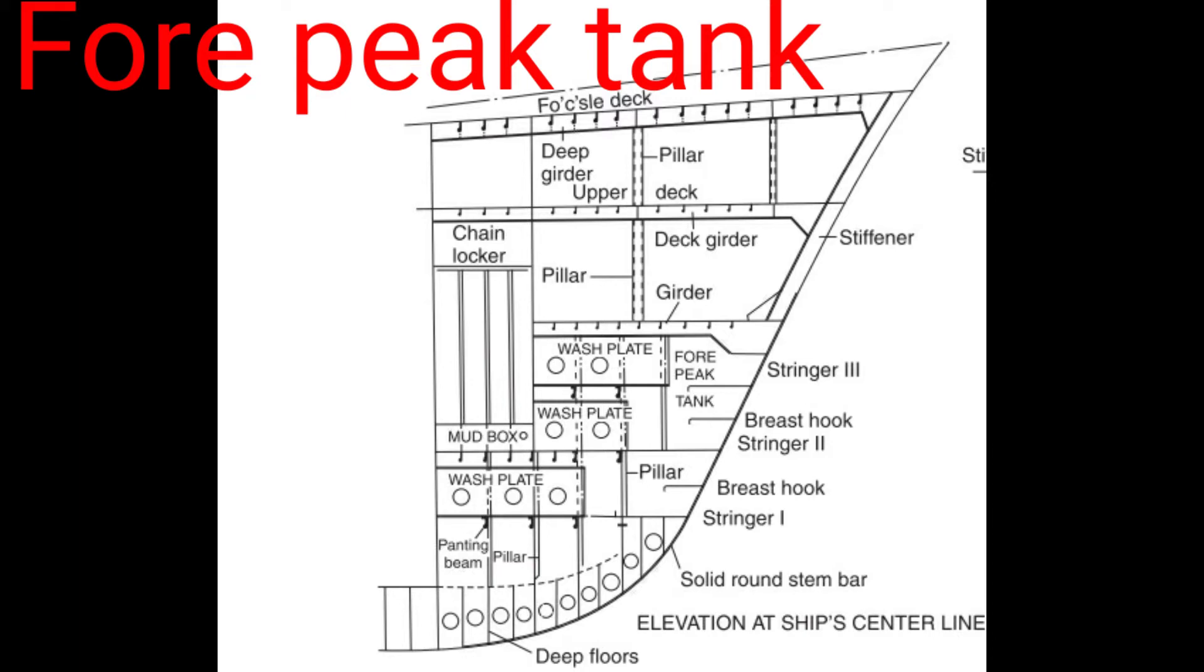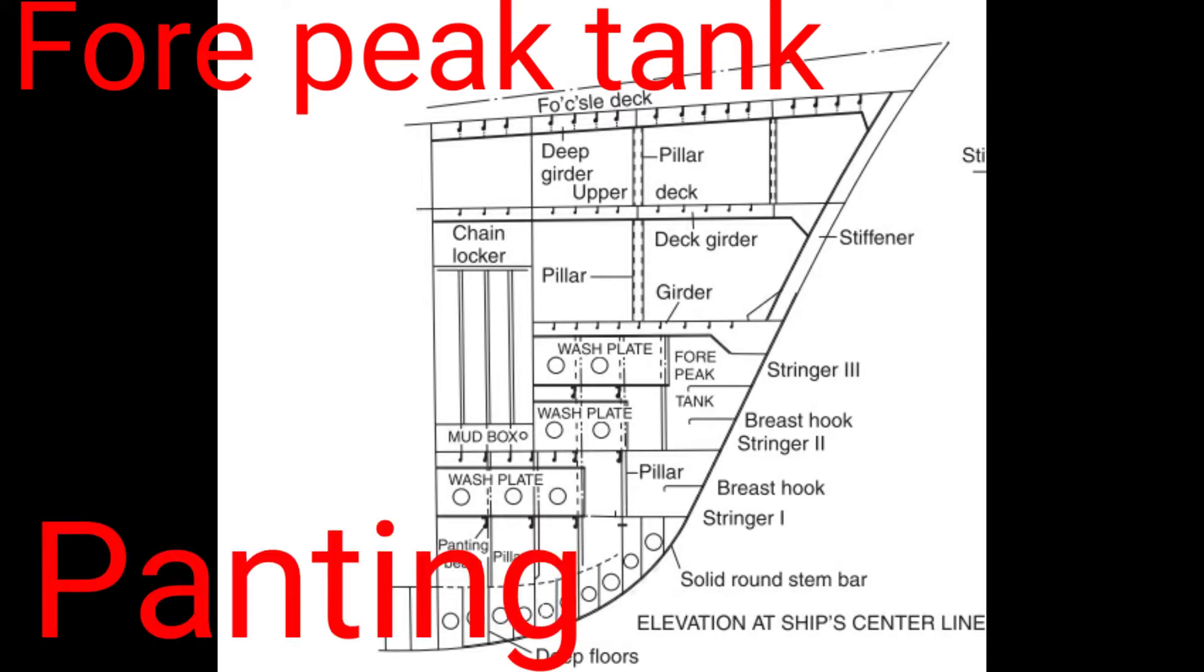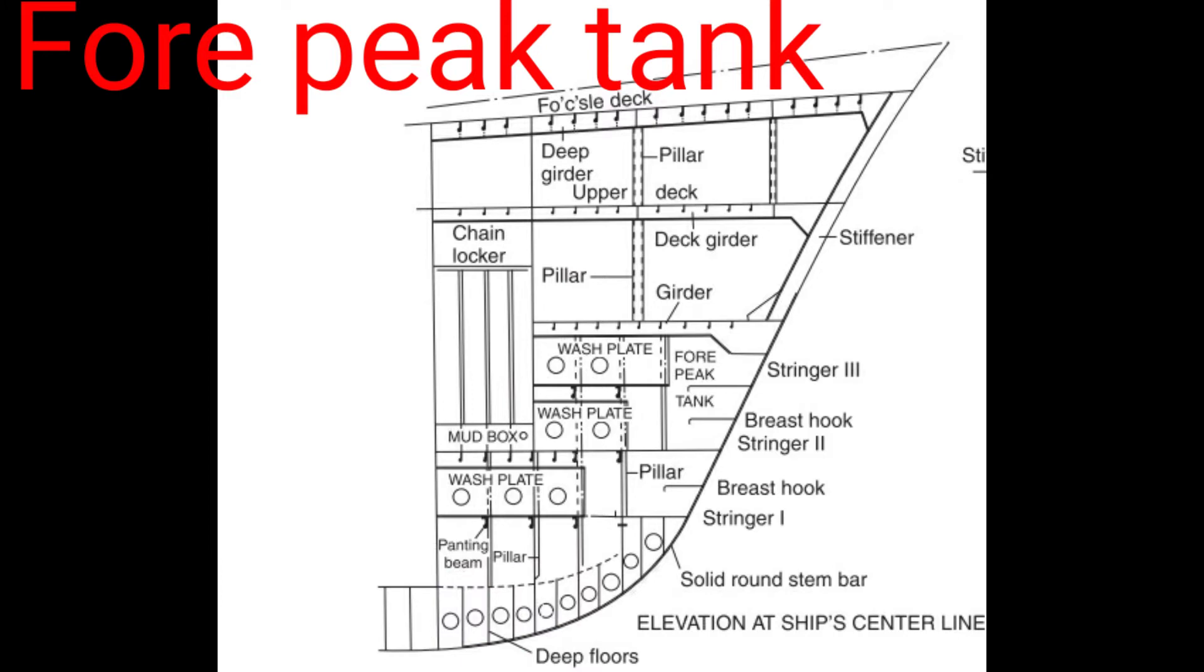Strengthening against panting is the most outstanding feature of the fore peak tank. This takes the form of panting beams and stringers. The panting stringers are essentially triangular plates bordering the tank horizontally.